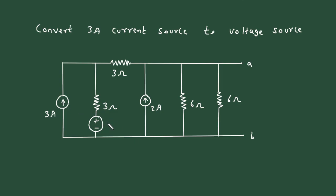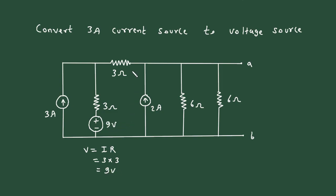Its value will be, according to Ohm's law, V is equal to I into R. The value of current is 3 ampere and the value of resistance is 3 ohm. So the value of voltage source will be 3 into 3, which is 9 volt. So this voltage source will be of 9 volt.